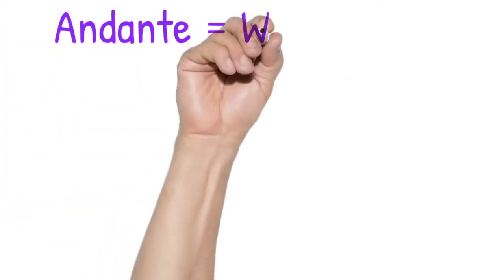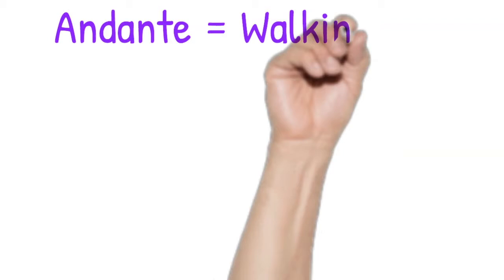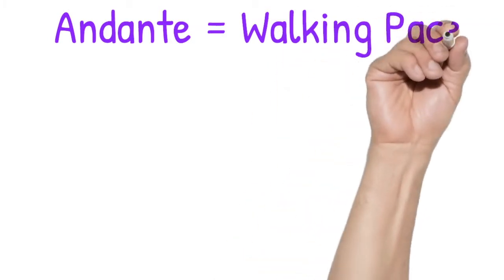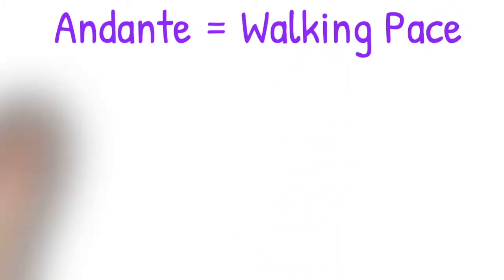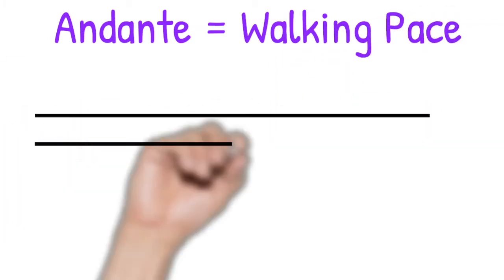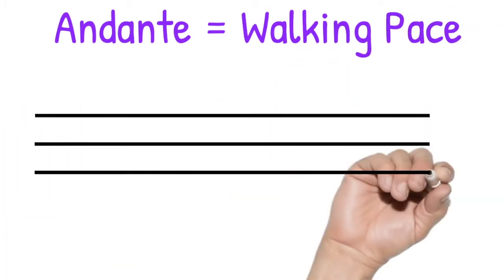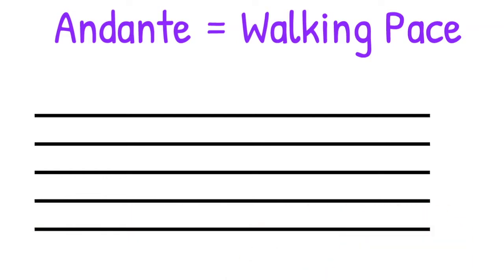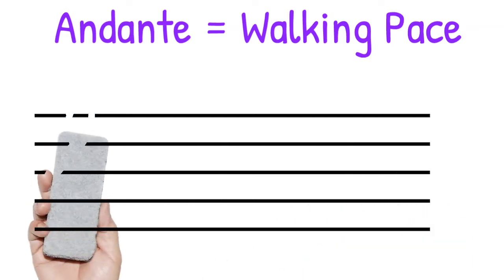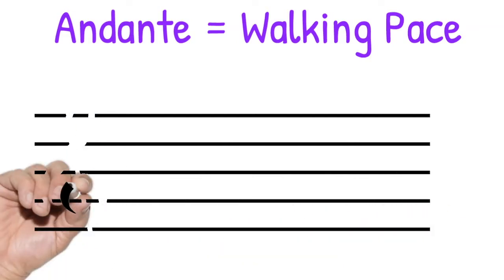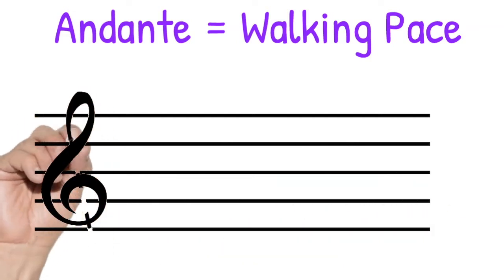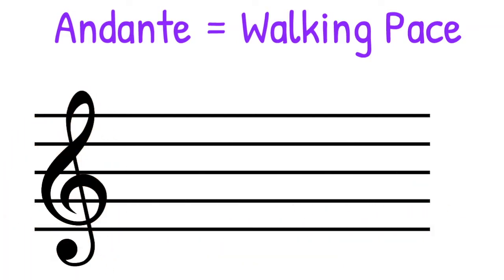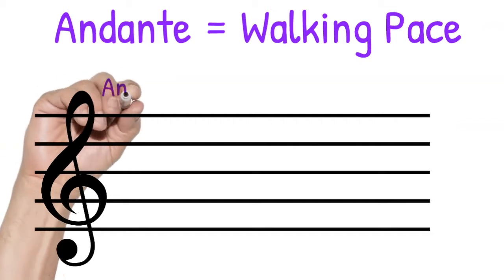Moving up a notch, we get to andante, which is a very common tempo. It means the music should be played at a moderate walking pace. A way to remember this is the phrase: andante — walking with your auntie.